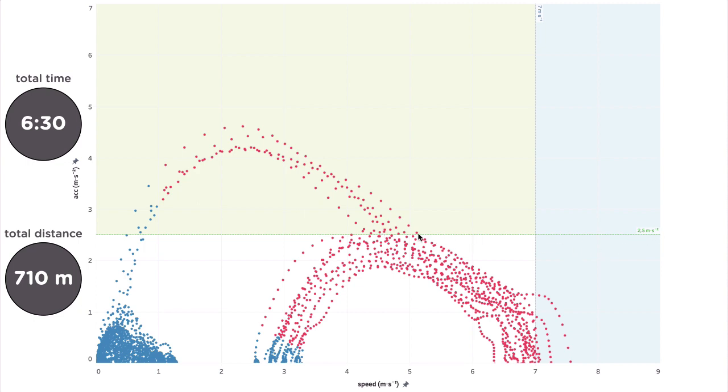We can also plot a line which represents all the combinations of speed and acceleration for a metabolic power output corresponding to the VO2max of the athlete. Let's say 18 watts per kilogram body mass.